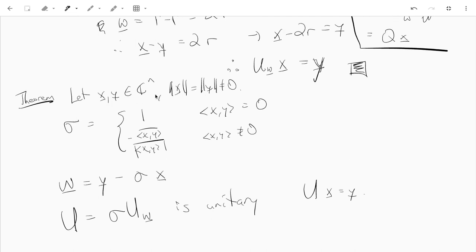So if we have two vectors in C^n, whose norms are equal, then we have this kind of factor sigma. We set sigma to be one if x is orthogonal to y. And otherwise, we have this term, the negative of the conjugate of the inner product with x and y divided by the modulus of the inner product of x and y, as long as the inner product is non-zero. And then we take our w to be y minus sigma x. And then we have this unitary matrix U, which is sigma times the Householder transformation Uw. And it's unitary, and it satisfies Ux equals y.